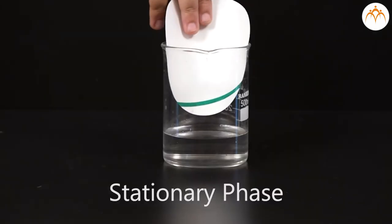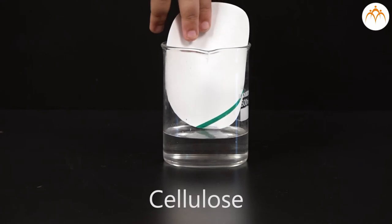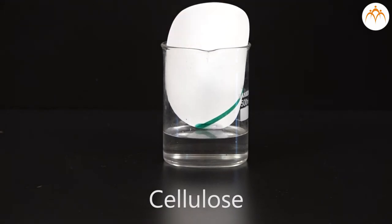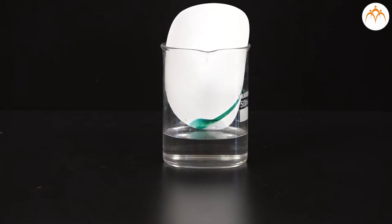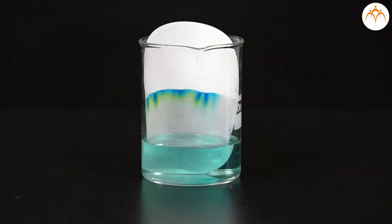The stationary phase is made up of cellulose which has trapped water between two layers. The compounds in the mixture get separated due to differences in their affinity or friendship towards water in the stationary phase and mobile phase solvents during the movement of the mobile phase under the capillary action of pores in the paper.